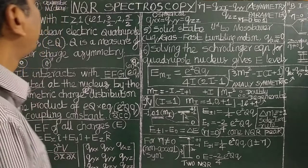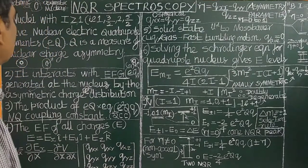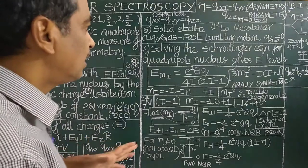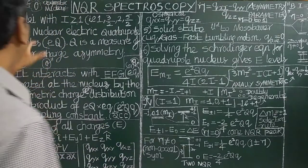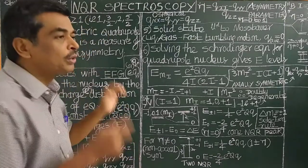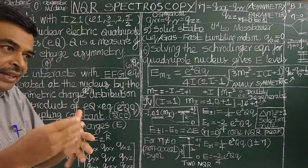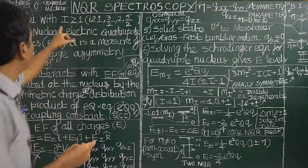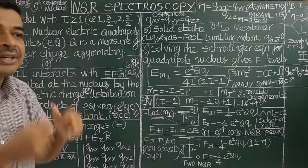Good morning. Let us see today NQR spectroscopy — what is NQR spectroscopy, the theory of NQR spectroscopy, and how the NQR spectrum is obtained. NQR is called Nuclear Quadrupole Resonance spectroscopy. Nuclei having spin quantum number I greater than or equal to 1 have a nuclear quadrupole electric moment.